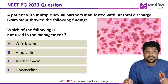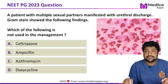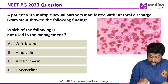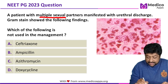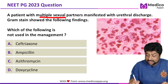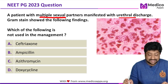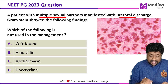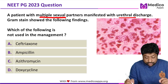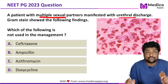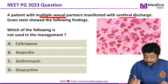This question appeared in NEET PG 2023 and is a clinical image-based question. A patient with multiple sexual partners manifested with urethral discharge, and the gram stain shows a particular image. The question asks which of the following should NOT be used in the management of this case.